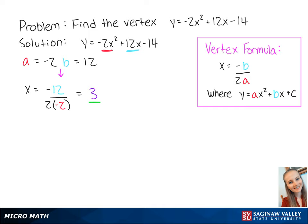Now we plug 3 into the original equation, which gives us y equals negative 2 times 3 squared plus 12 times 3 minus 14, which is equal to 4. Now we know that the vertex is 3, 4. This is the final answer.